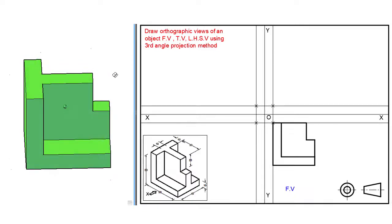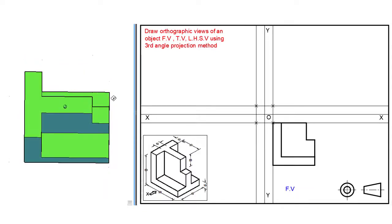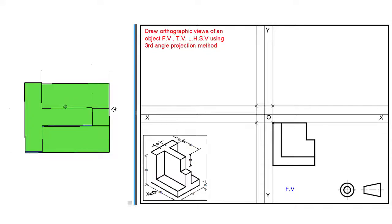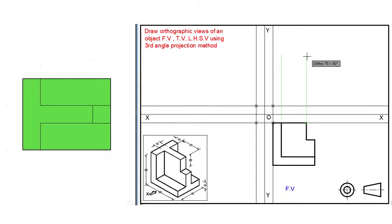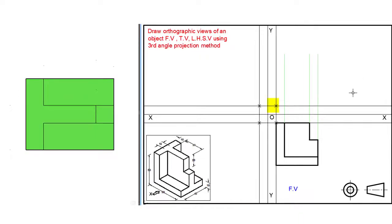Now to draw a top view, let us observe the top view of the given 3D object with respect to direction of view. To draw a top view, with the help of a roller scale take the projections of each point of the front view in the upward direction as shown. Our reference point for the top view is located at the bottom left corner — let us locate that point in the given 3D object, so that is the point.